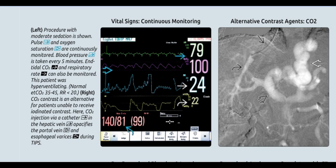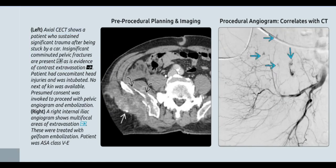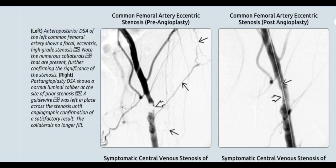CO2 contrast is an alternative for patients unable to receive iodinated contrast. CO2 injection via a catheter in the hepatic vein opacifies the portal vein and esophageal varices during TIPS. Axial CECT shows a patient who sustained significant trauma after being struck by a car; significant comminuted pelvic fractures are present, as is evidence of contrast extravasation. The patient had concomitant head injuries and was intubated; no next of kin was available, and presumed consent was invoked to proceed with pelvic angiogram and embolization.